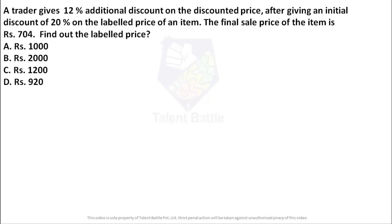This particular question was asked by Pritesh from AMC College of Engineering. Let's check the question. A trader gives 12% additional discount on the discounted price after giving an initial discount of 20% on labeled price of an item. The final sale price of the item is 704. Find out the labeled price.